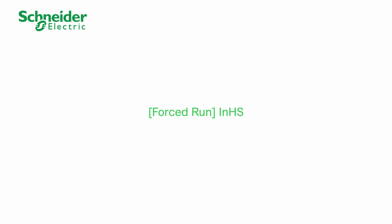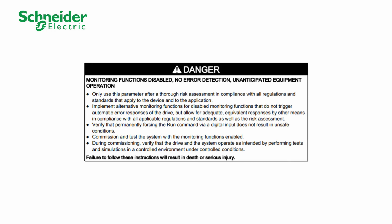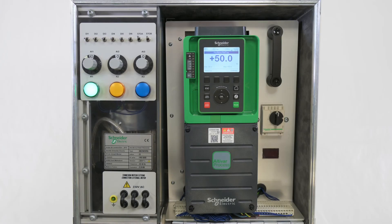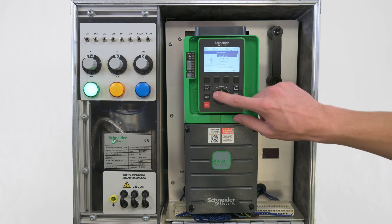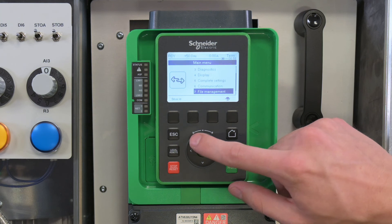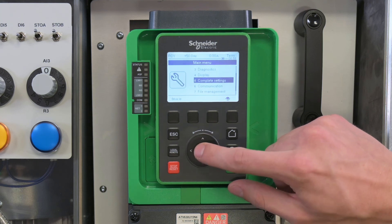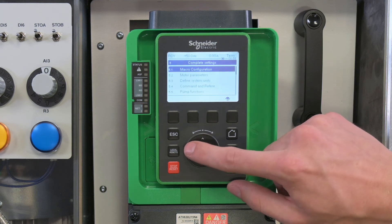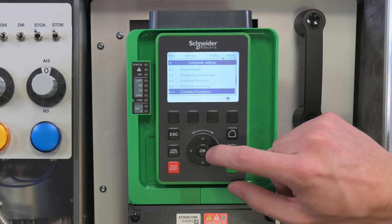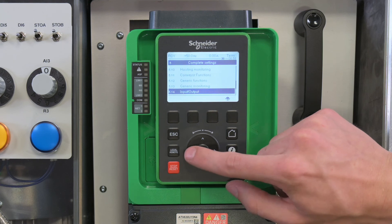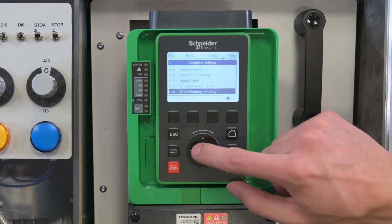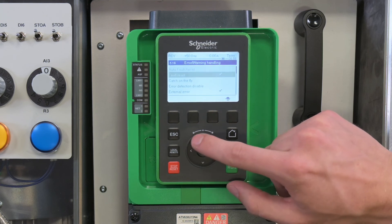Forced run. Before using forced run, be sure to read and fully understand the following safety message. By setting up forced run, your motor will run without triggering certain errors. First, enable forced run and select the direction of rotation — forward or reverse — to apply in forced run mode.